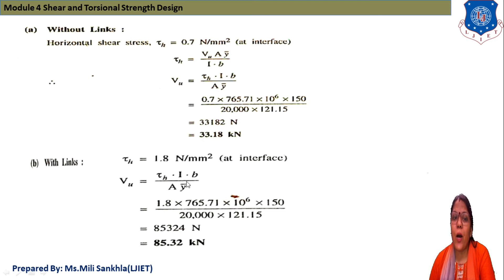Now with link, τh is given 1.8. Vu = τh × I × b / (A × ȳb). With link, our ultimate shear force is 85.32 kN. In both conditions, without link we get lower shear force compared to with link.